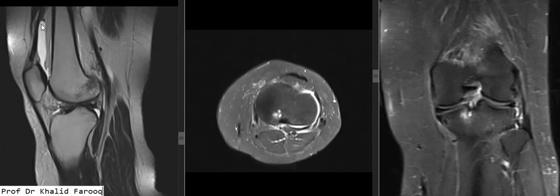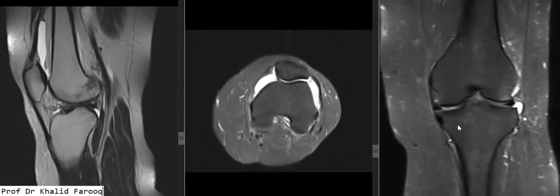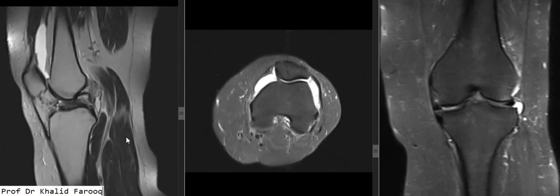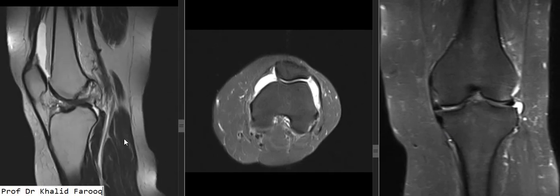The quadriceps and patellar tendons are normal. So this is an example of total ACL transection resulting in anterior tibial translation with a small amount of joint effusion. Thank you very much. Assalamu alaikum warahmatullahi.